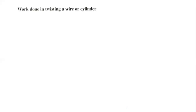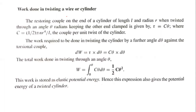We also have a new idea: work done in twisting a wire or cylinder. Work done is given by the rotational formula: work done equals torque times d theta, which is C theta times d theta. This work done is the elastic potential energy. Hence, this expression also gives the potential energy stored in a twisted cylinder.